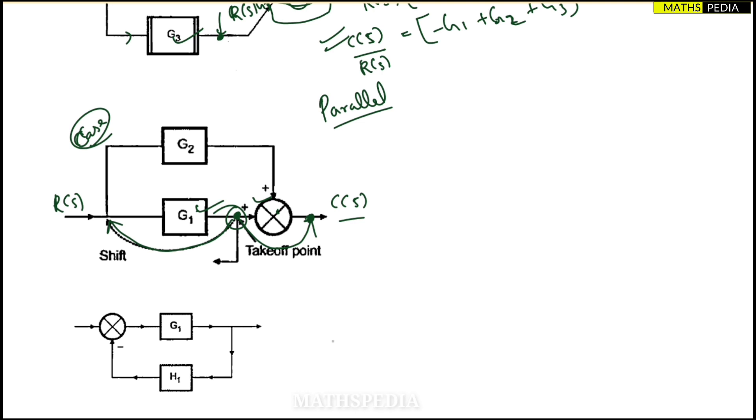So I have to either shift this takeoff point to the left side over here before G1, or I can shift it after the summing point over here. These two cases can be done in order to make these two blocks parallel. So these two blocks are not in parallel, but if you shift this takeoff point to the left side before G1 or after summing point, it can be made as parallel. So this thing you have to understand carefully.